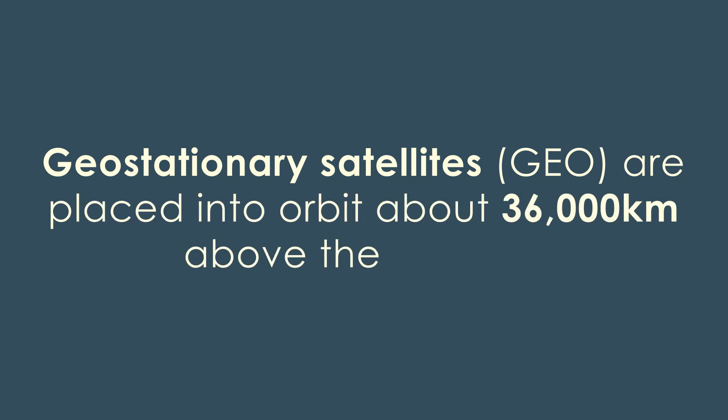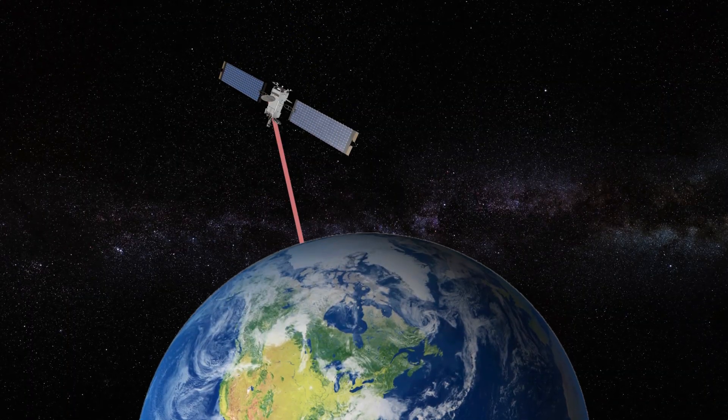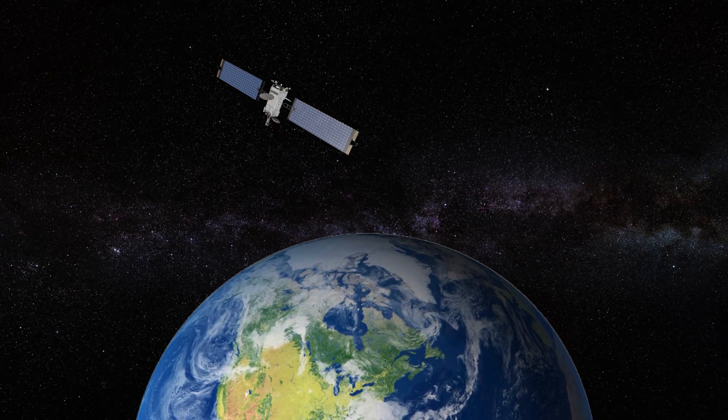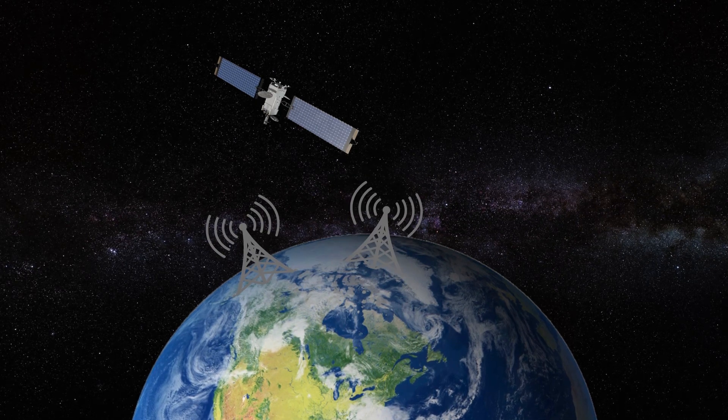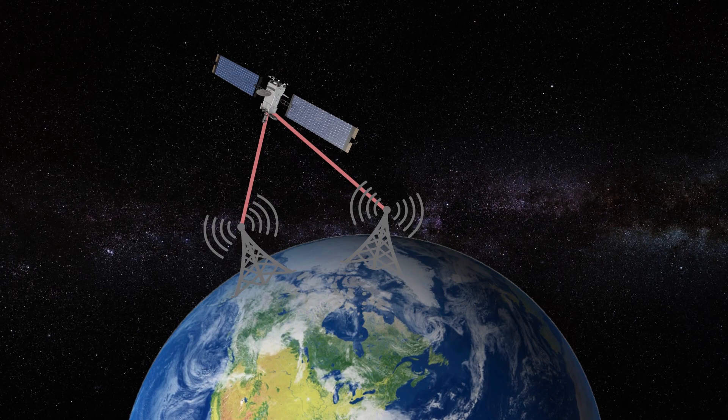Geostationary satellites, or geosatellites, they're placed into an orbit 36,000 kilometers above the surface and they orbit as fast as the Earth rotates in one day. This gives geosatellites the ability to stay in a fixed position, one particular location relative to the surface of the Earth. And it makes geosats perfect for telecommunications by connecting two or more points, towers, that are thousands of miles apart on the Earth.